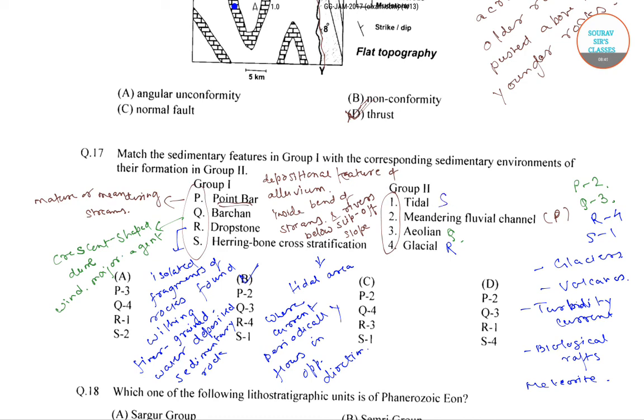The correct answer is option B. With point bar, it is meandering fluvial channel. With barchan, it is aeolian. With dropstone, it is glacial. And with herringbone cross stratification, it is tidal.